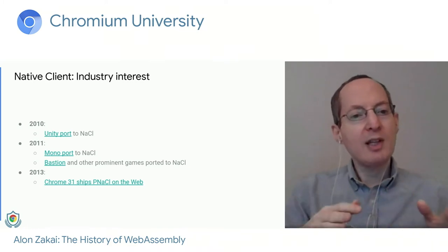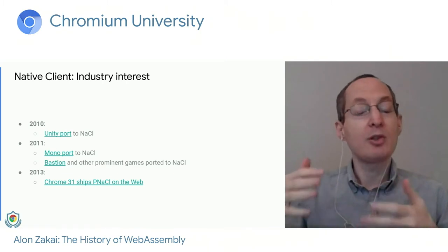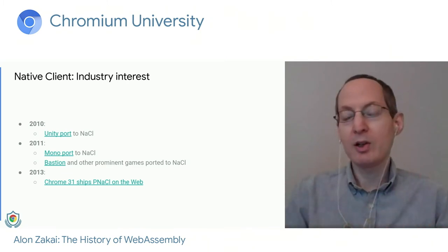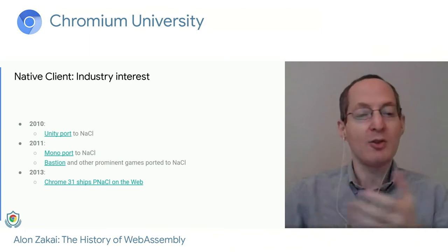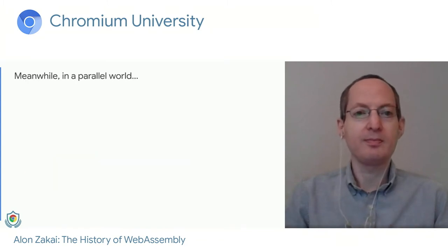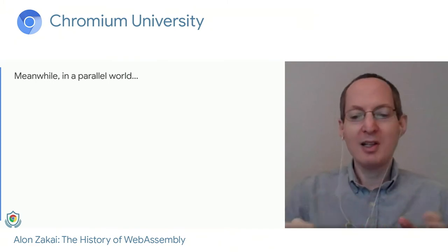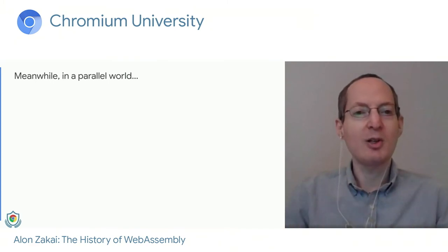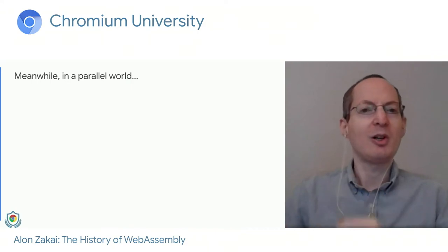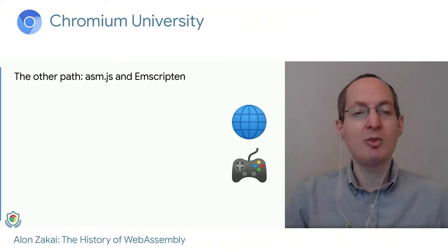At this time, other browser vendors were not on board. But the idea was: we'll enable this, give web developers a chance to use it and build things with it, and hopefully they'll build really cool things — and that'll be a way to get other browser vendors interested in the NaCl project. Now, there's another set of technologies in this space that made an impact: the asm.js and Emscripten projects.